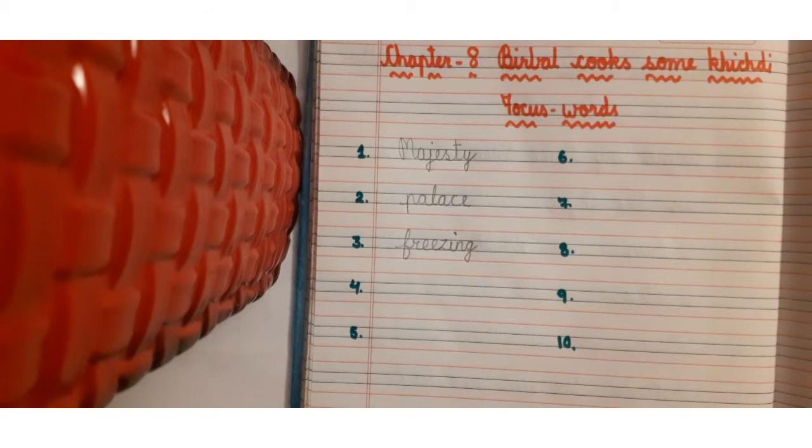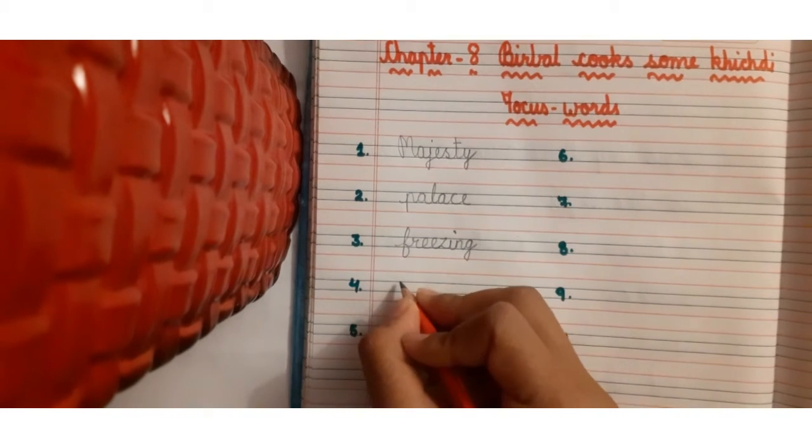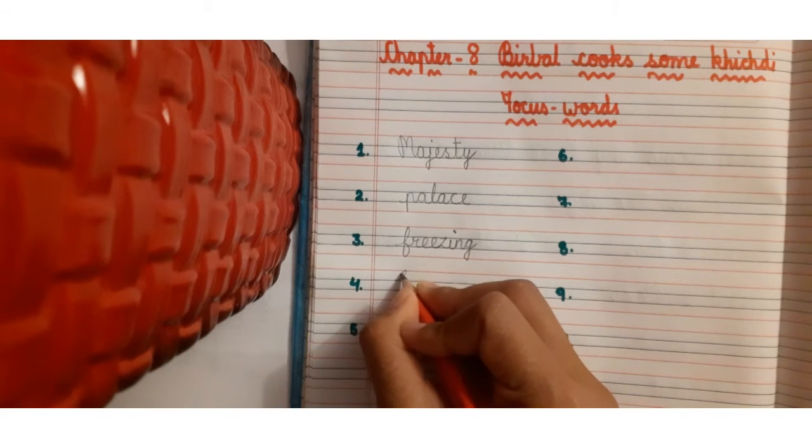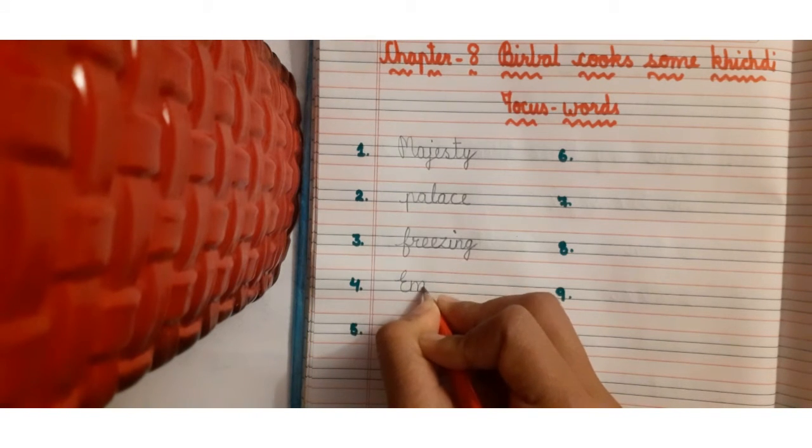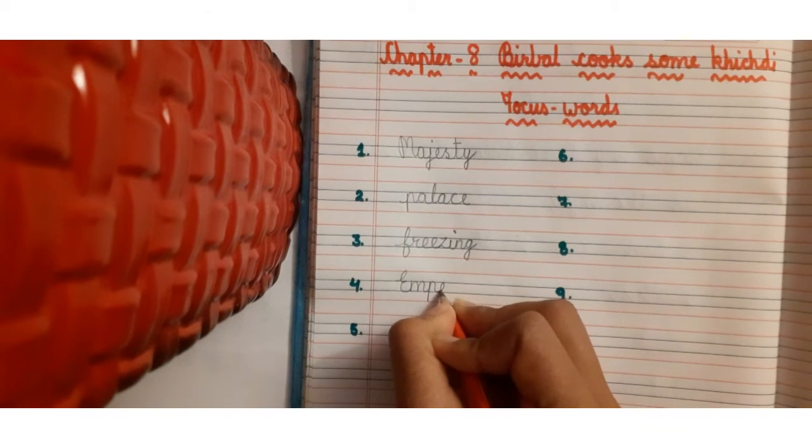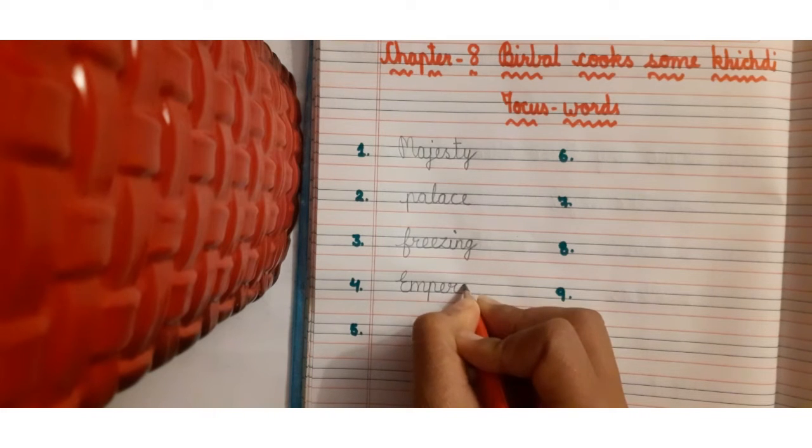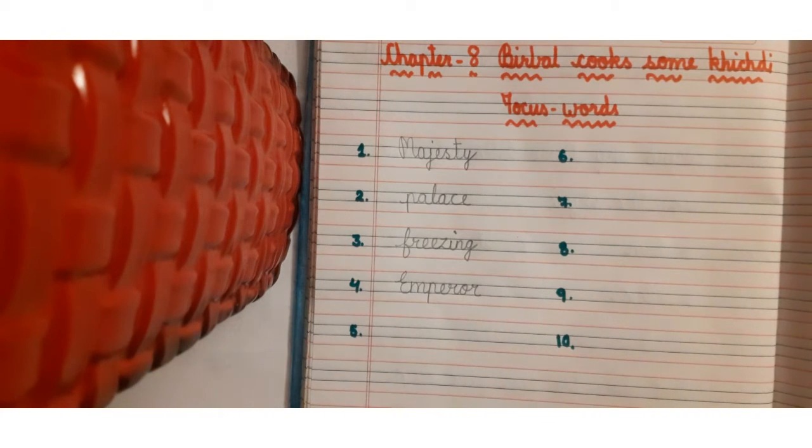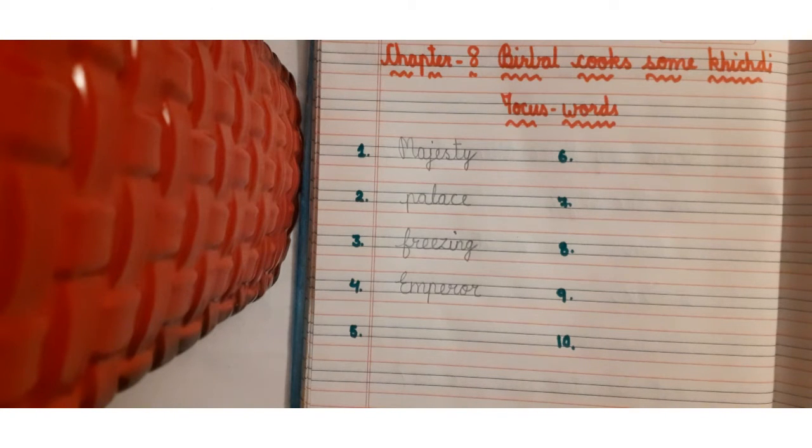Next is emperor. Write down emperor. Emperor kisko bolta hai?